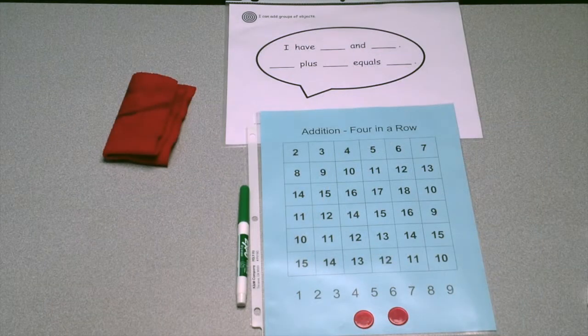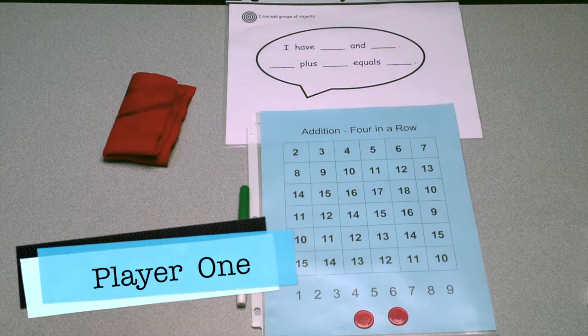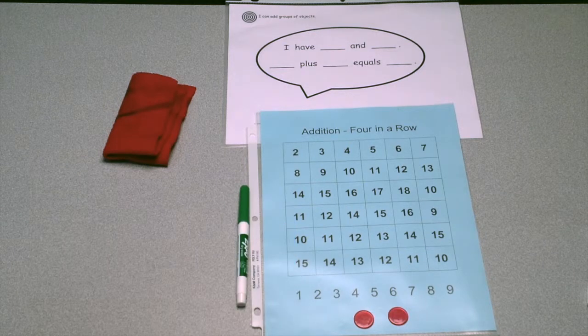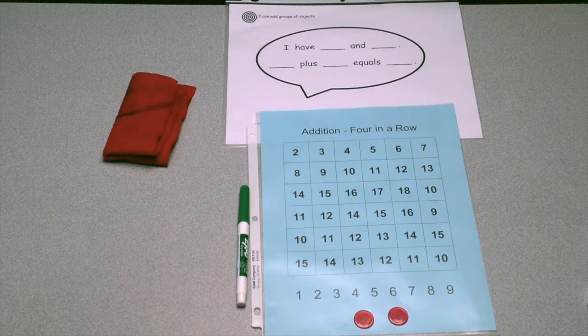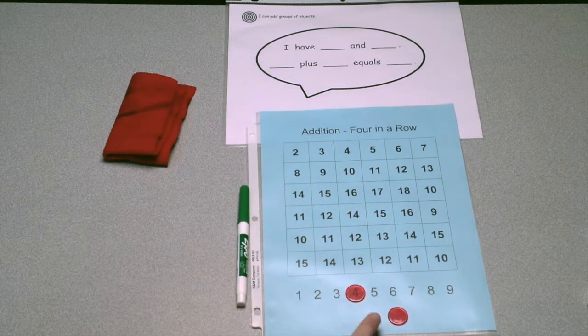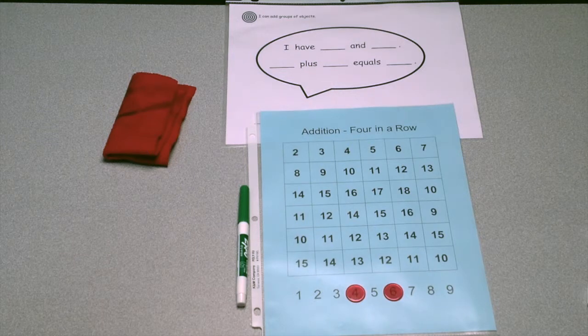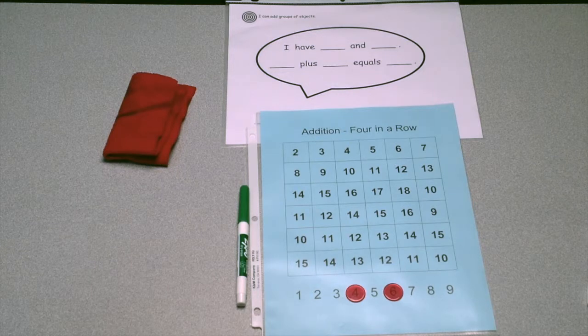Begin by deciding which number you would like to cover on the game board. Place the two game pieces on the numbers at the bottom of the game board that correspond. For example, I want to cover the number 10, so I'm going to place my game pieces over number 4 and number 6. Use the Speech Bubble to tell what you did. I have 4 and 6. 4 plus 6 equals 10.